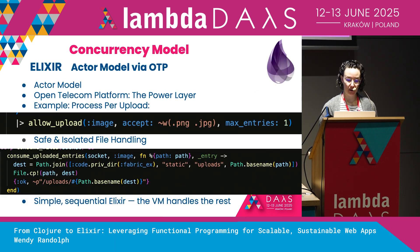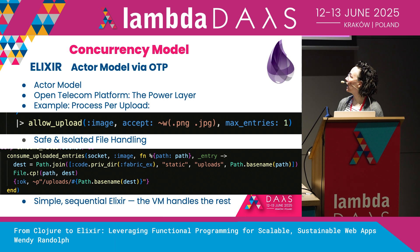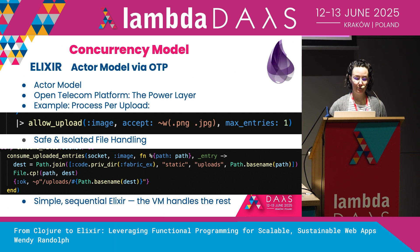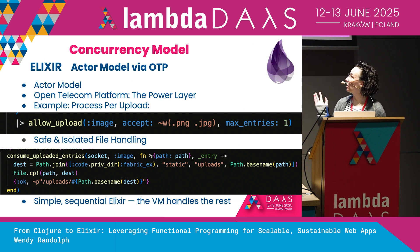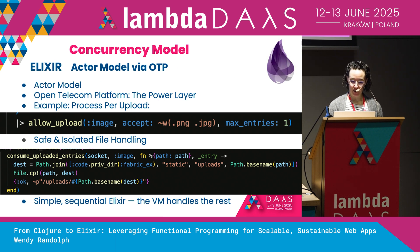With Elixir, they use the actor model via OTP. Everything runs in lightweight, isolated processes with no shared state. These processes are powered by the Open Telecom Platform, or OTP — that's your power layer, the battle-tested set of patterns and libraries for building fault-tolerant systems like supervisors, tasks, and gen servers. Here in this example, we get a process per upload. LiveView spins up a process per upload, handling the concurrency under the hood, and each file is consumed in its own BEAM process. The virtual machine handles the scheduling, load balancing, and recovery while you write simple declarative code.